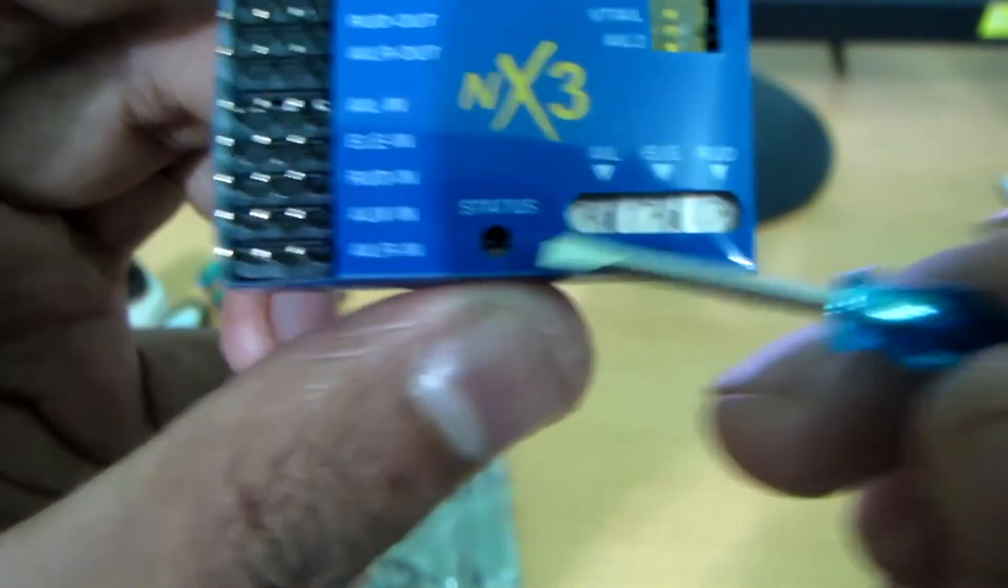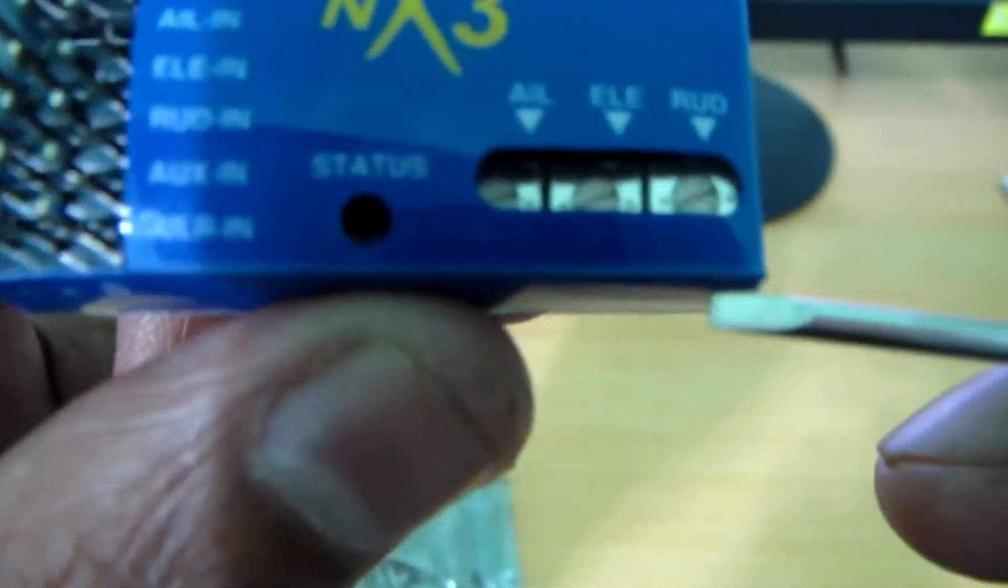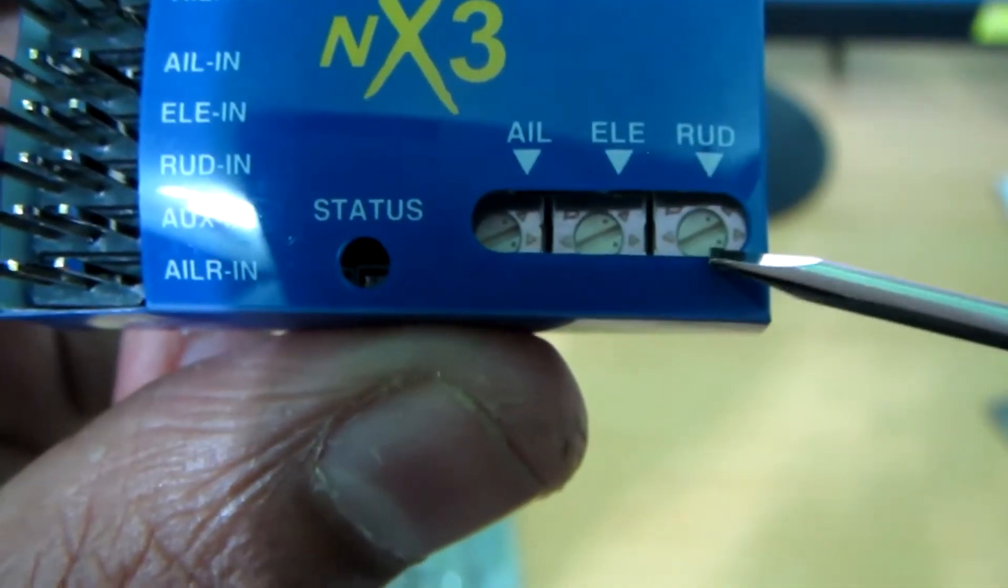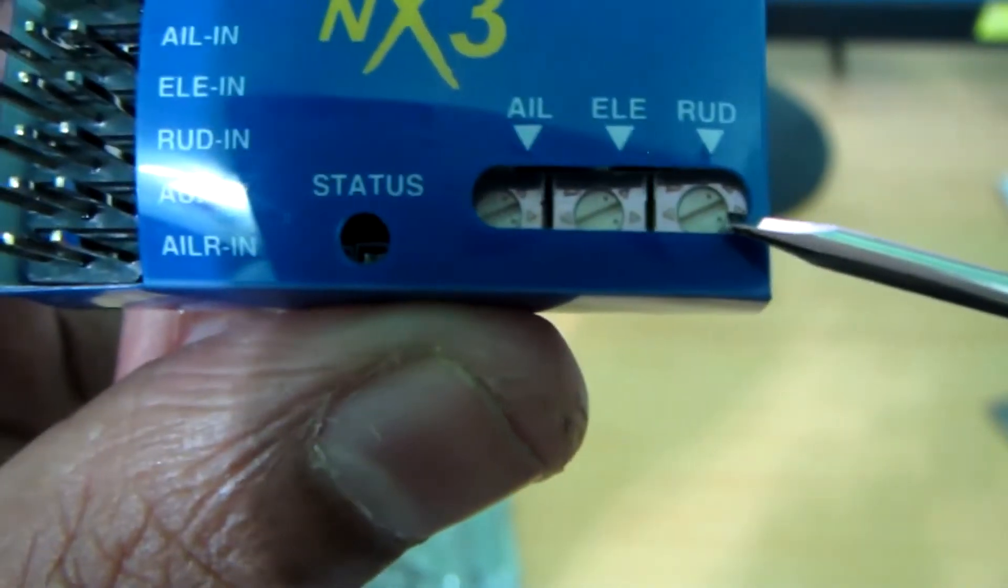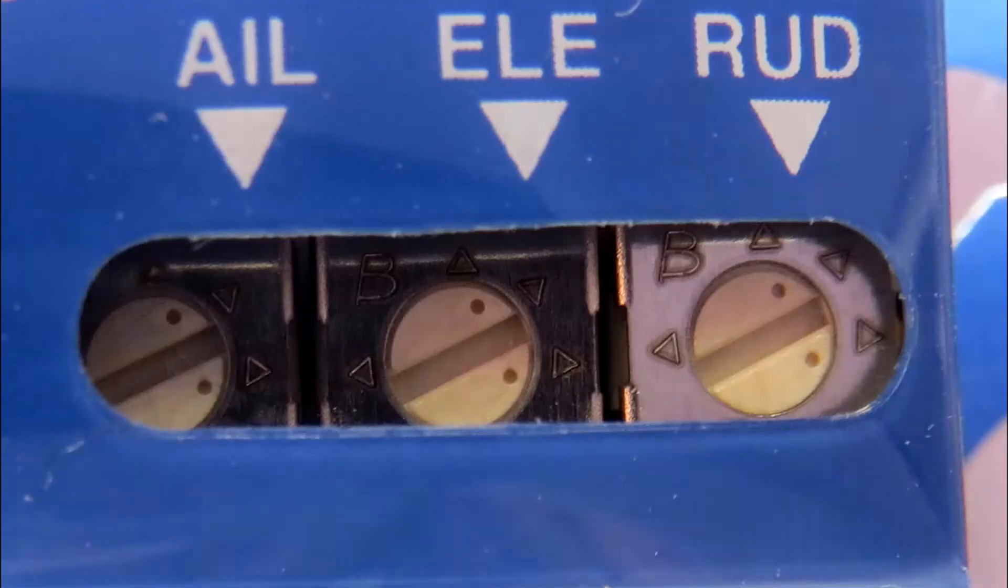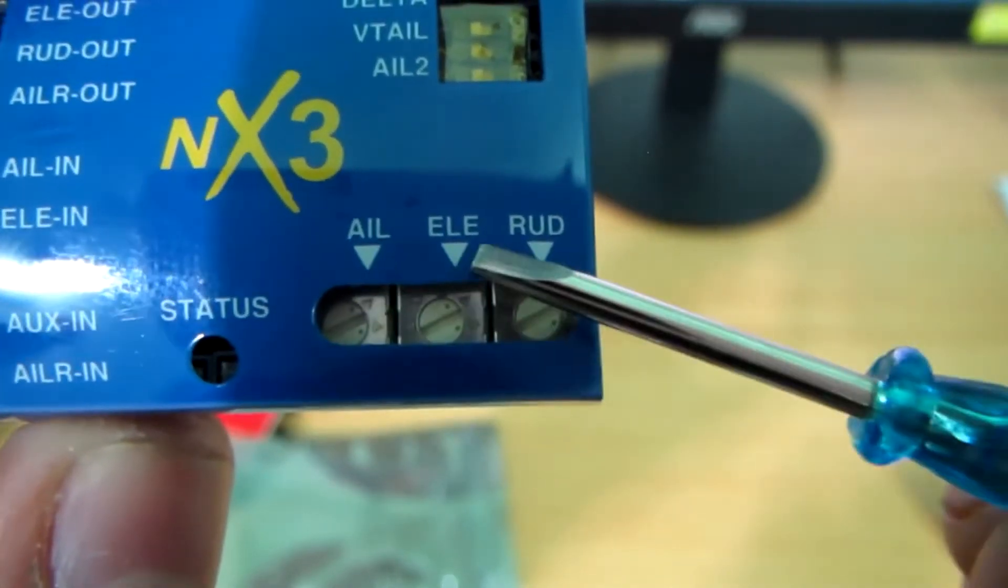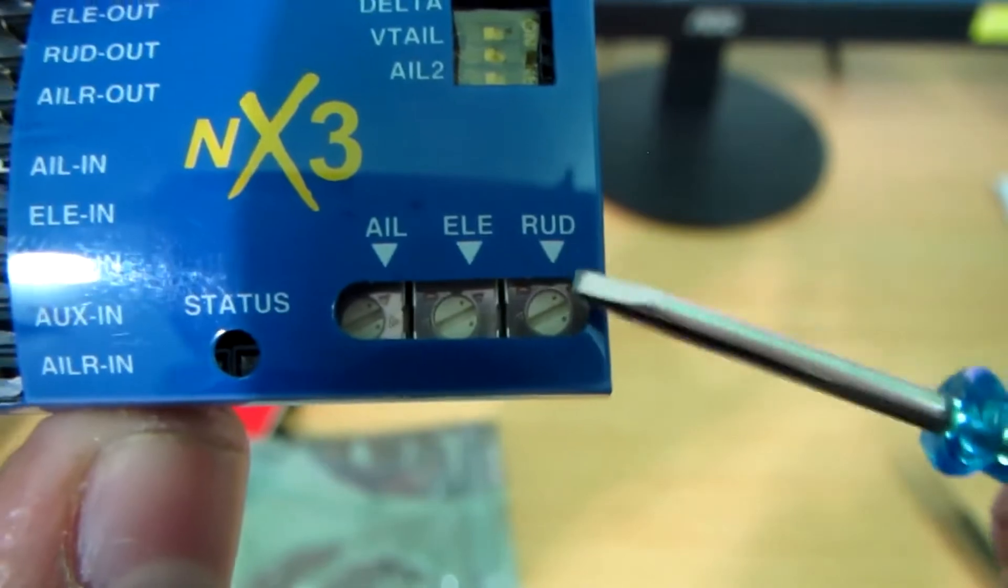This is the status LED. And here you can set your gain. See these little dots here? These are the pointers which indicate your gain. And this is your aileron, this is your elevator gain, and this is your rudder gain.